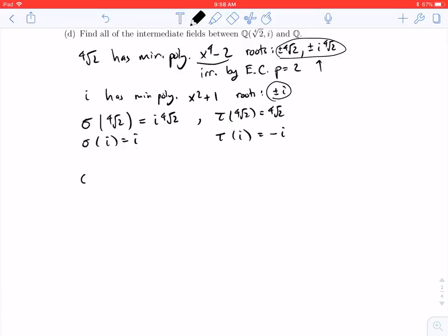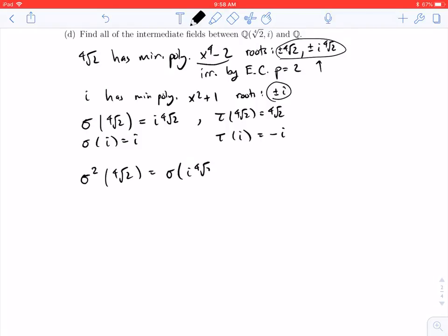So let's take a look, for example, at what happens when I square sigma. So I apply it to the fourth root of 2. The first time, I just get i times the fourth root of 2. And since sigma fixes i, this is going to be the same as i times sigma fourth root of 2, which is i fourth root of 2. And now i times i is negative 1, so I get negative fourth root of 2.